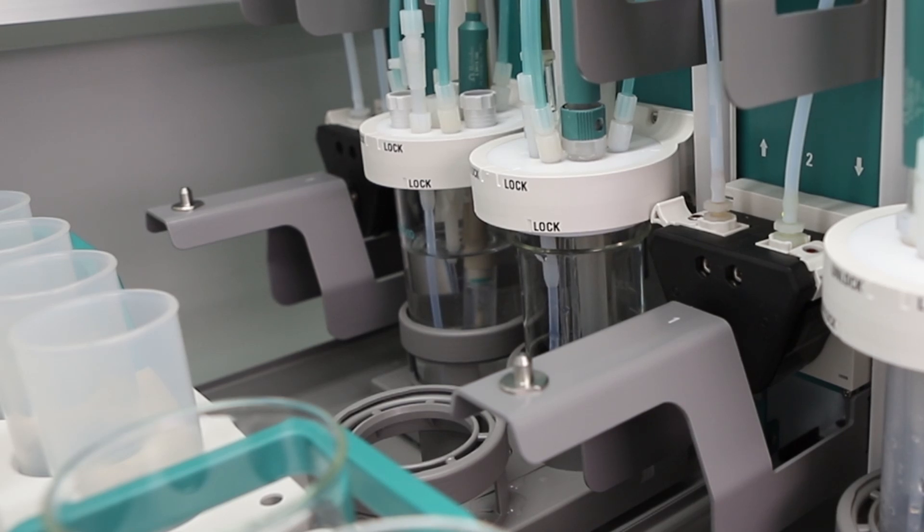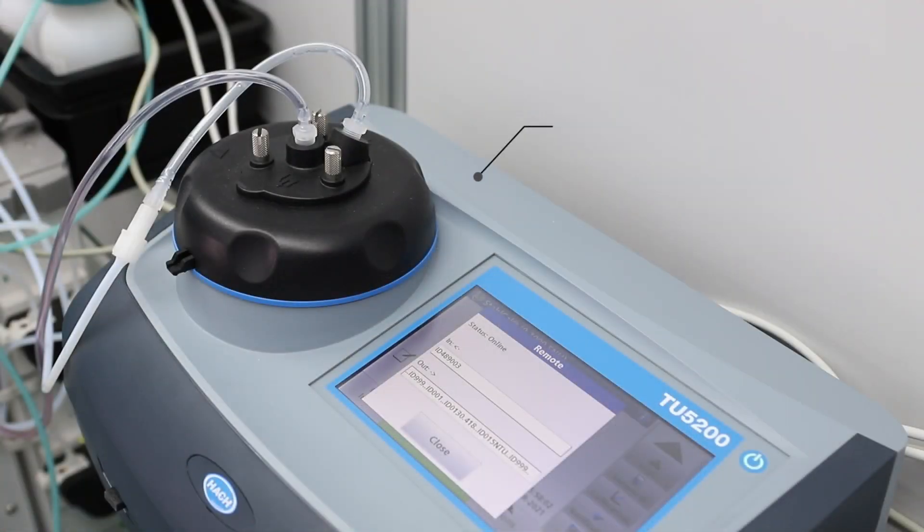The sample is transferred to the flow-through cell of the turbidity meter using the peristaltic pump, and then the turbidity is measured.